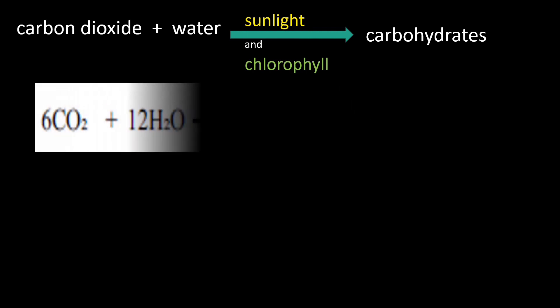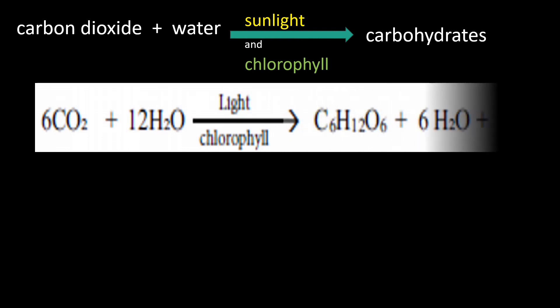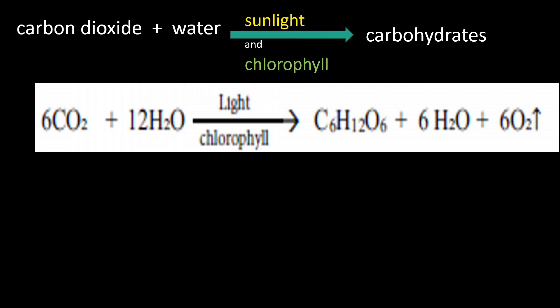The photosynthesis equation is: 6CO2 + 12H2O → C6H12O6 + 6H2O + 6O2. C6H12O6 is glucose, which is a carbohydrate. Photosynthesis liberates oxygen — oxygen is released and carbon dioxide is taken in during photosynthesis.